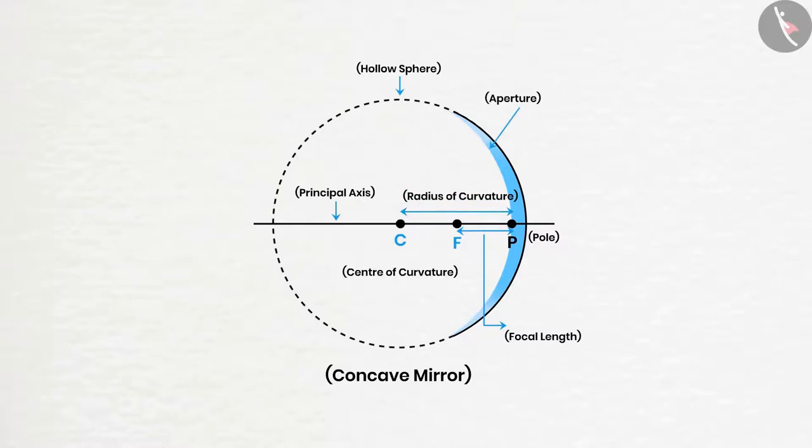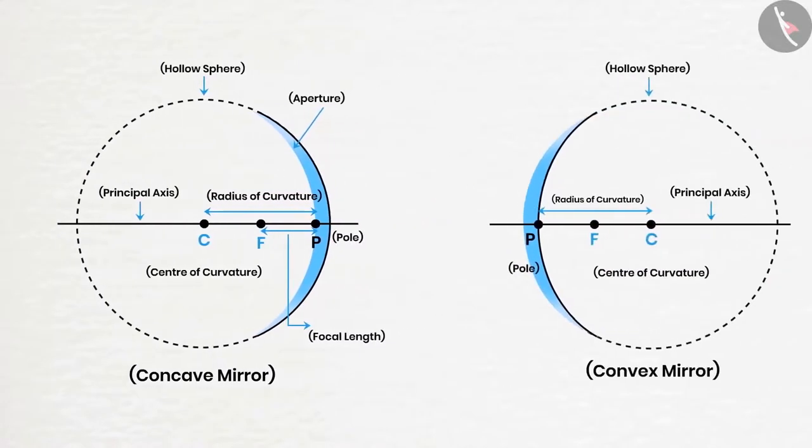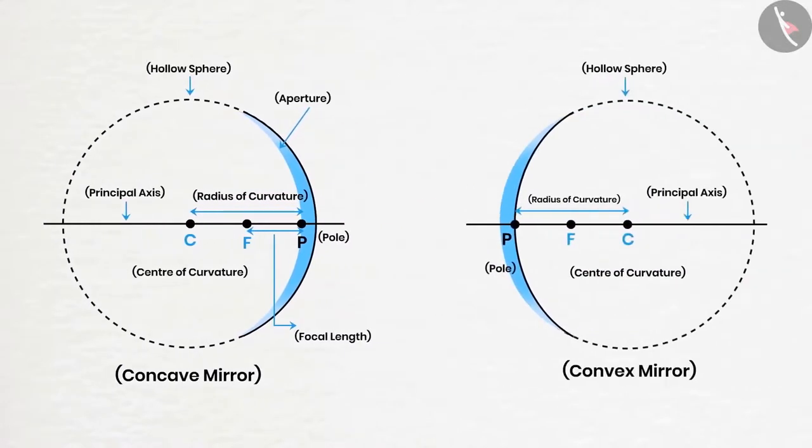One should keep in mind that radius of curvature is twice the focal length. Like focus, all these points lie in front of the concave mirror and at the back of the convex mirror.